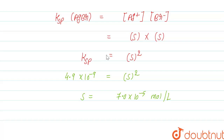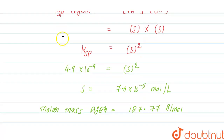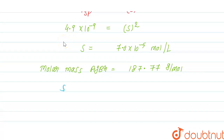We are given four options — two in mole per liter and two in gram per liter. So now we can convert solubility to gram per liter by multiplying by the molar mass. The molar mass of AgBr is 187.77 gram per mole. So solubility in gram per liter equals 7.0×10⁻⁵ mol/L × 187.77 g/mol.